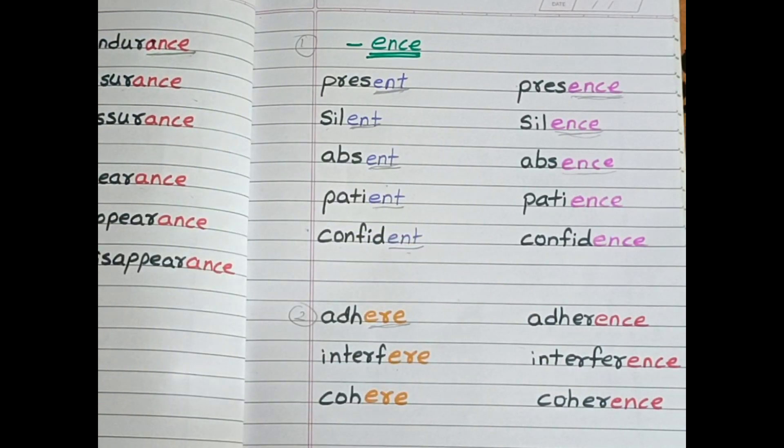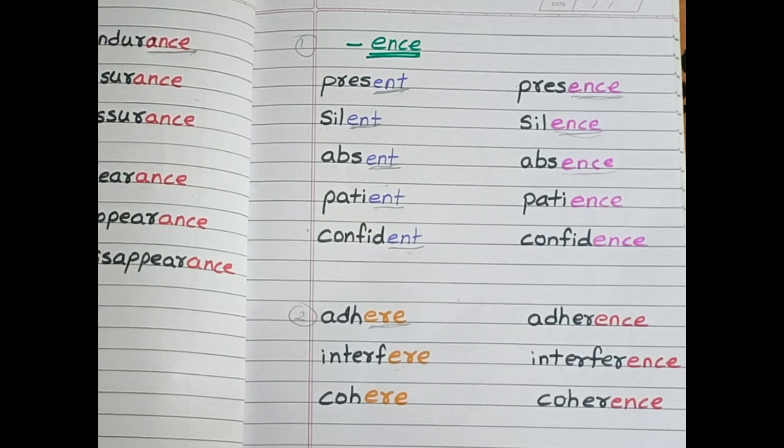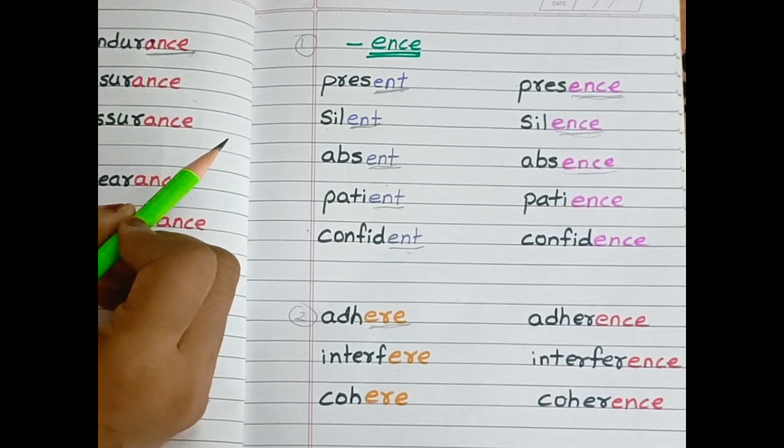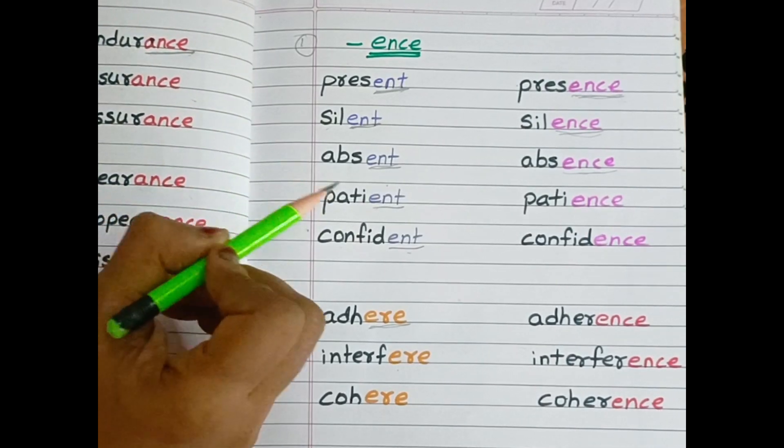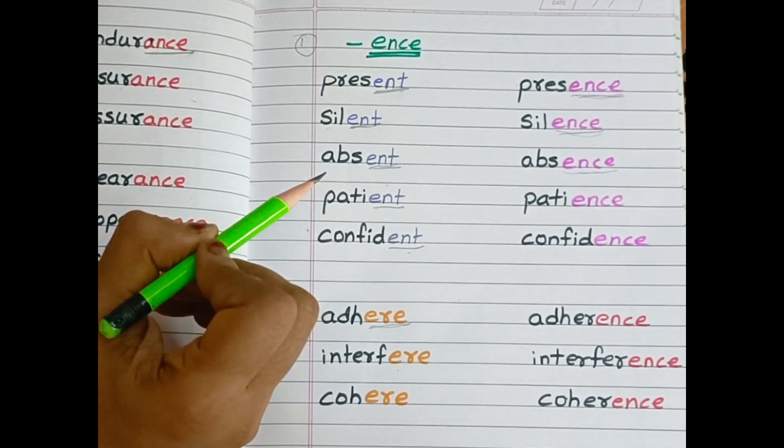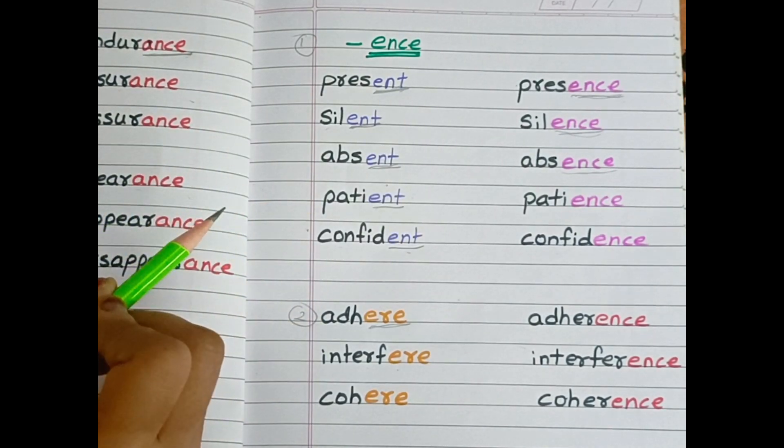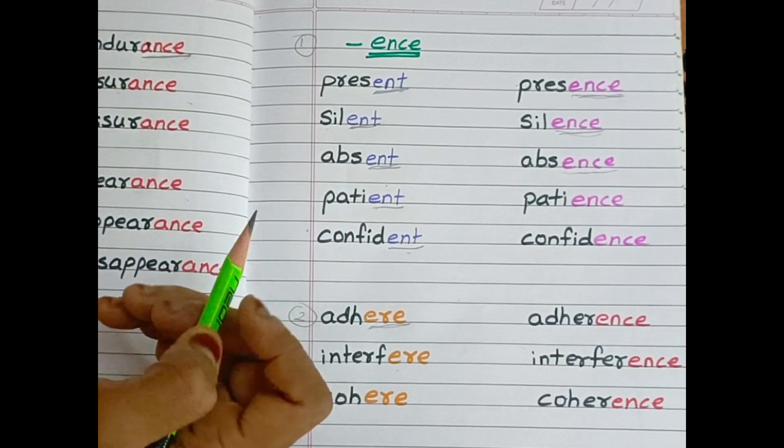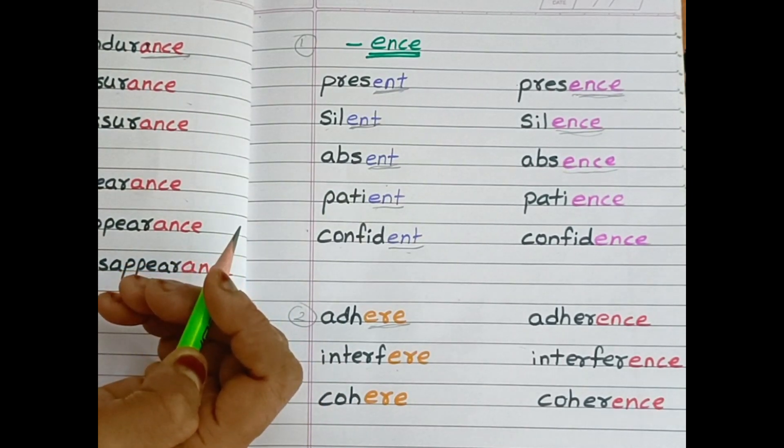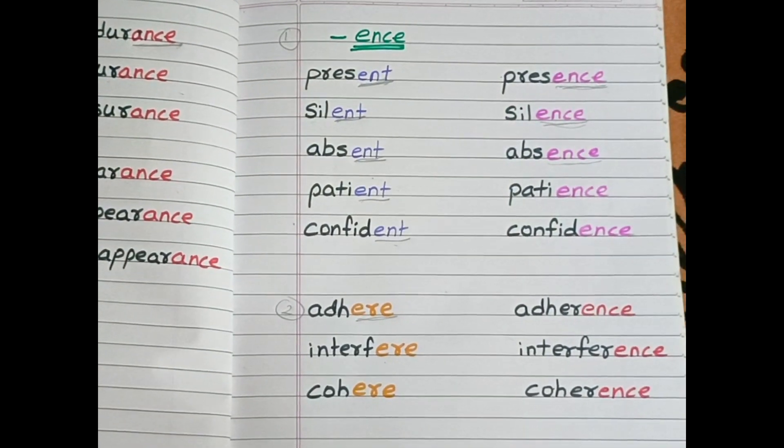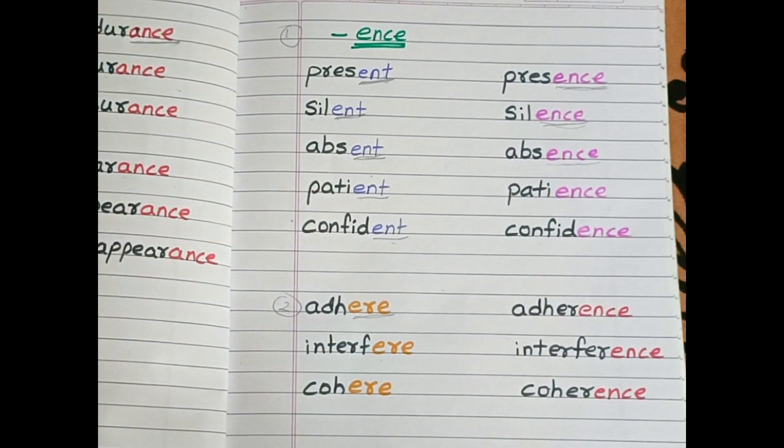So these are the rules of a-n-c-e and e-n-c-e, because both sounds are the same and children may get confused where to write a-n-c-e and e-n-c-e. So hope my video is helping you. If you feel so, please like, share, and subscribe. Thank you so much for watching. See you in the next video. Bye-bye.